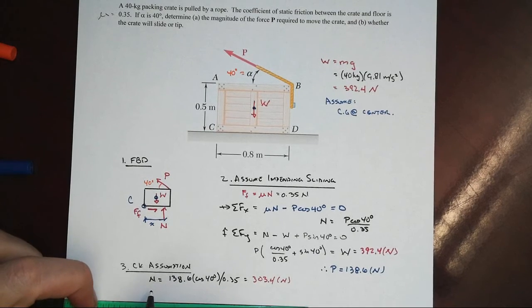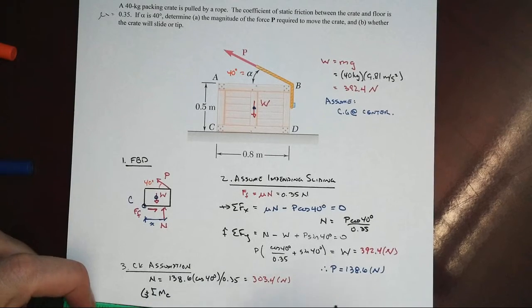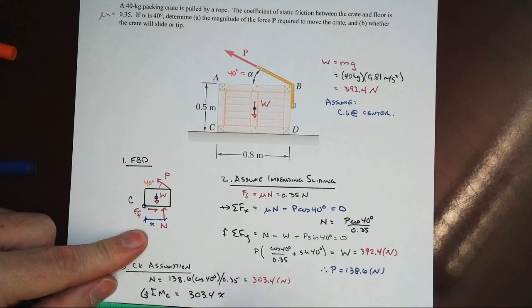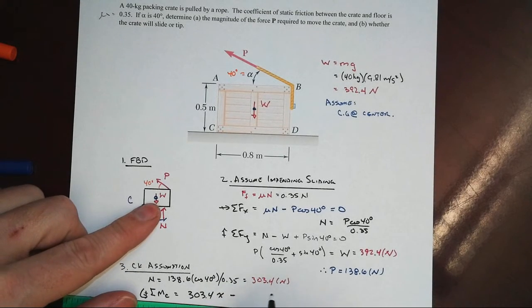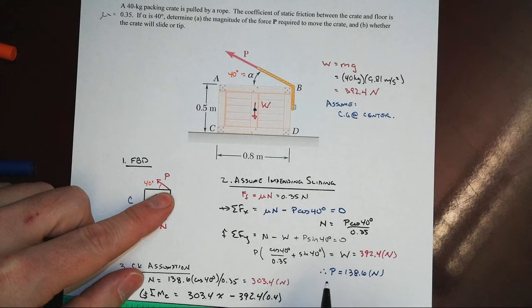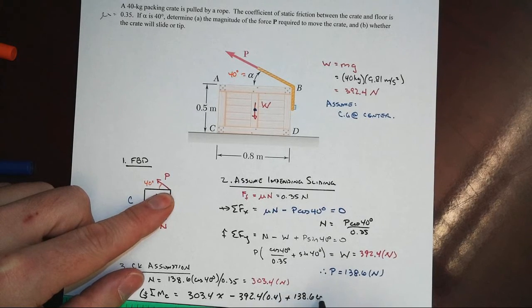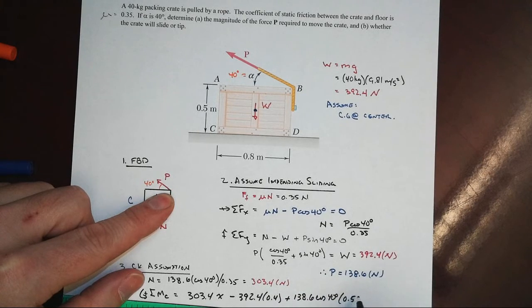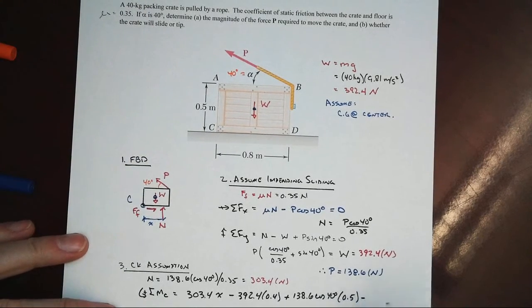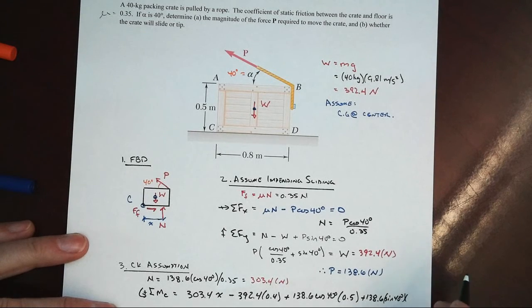And now when we sum moments about point C, let's take clockwise as positive. We've got our n value, our normal force value of 303.4 times an unknown moment arm of x. And then minus our w value of 392.4 times a moment arm of 0.4 meters. And then our pulling force here will break up into two components. The x component will be 138.6 times cosine of 40 degrees with a moment arm of 0.5 meters. That's that value right there. And then we'll also have the y component, sine of 40 degrees, times this moment arm of 0.8 meters. Set equal to zero.